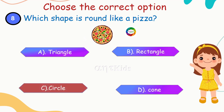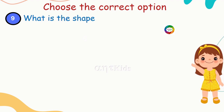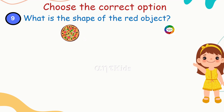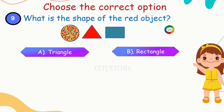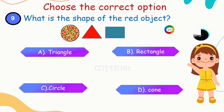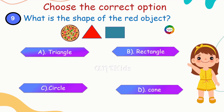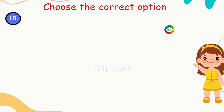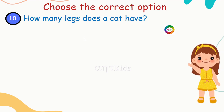A circle looks like a pizza. Next question: what is the shape of the red object here? Options: triangle, circle, cone. The red object is a triangle — very good!